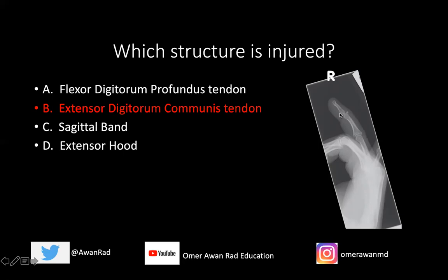If the volar aspect of the distal phalanx was avulsed, that would be a jersey finger, or an avulsion of the flexor digitorum profundus tendon — the answer would have been A. But here, this is an avulsion of the dorsal aspect, and the extensor tendon injury is much more common than a flexor tendon injury.